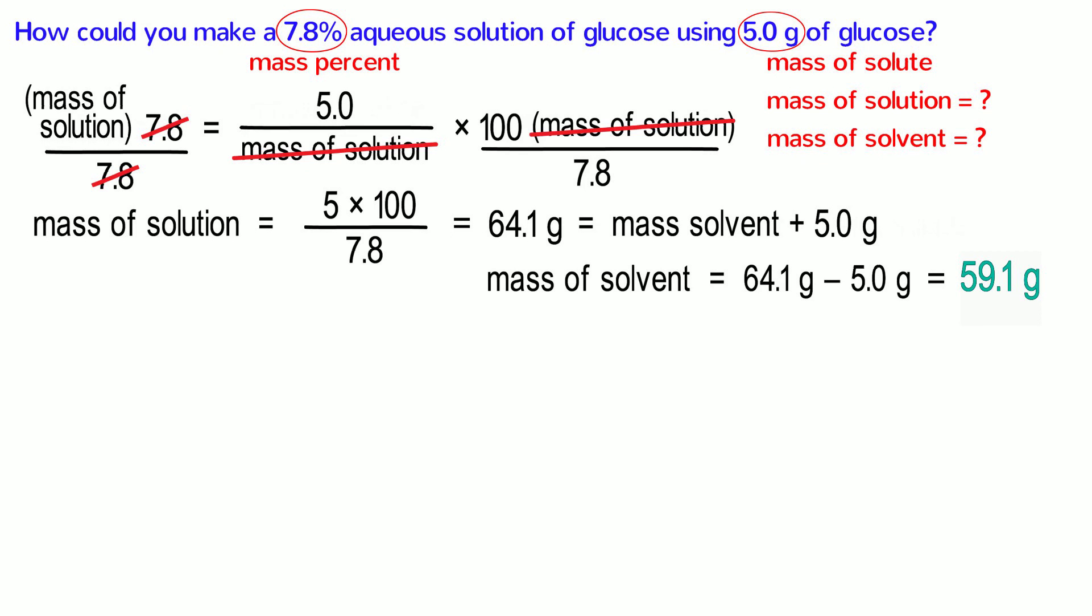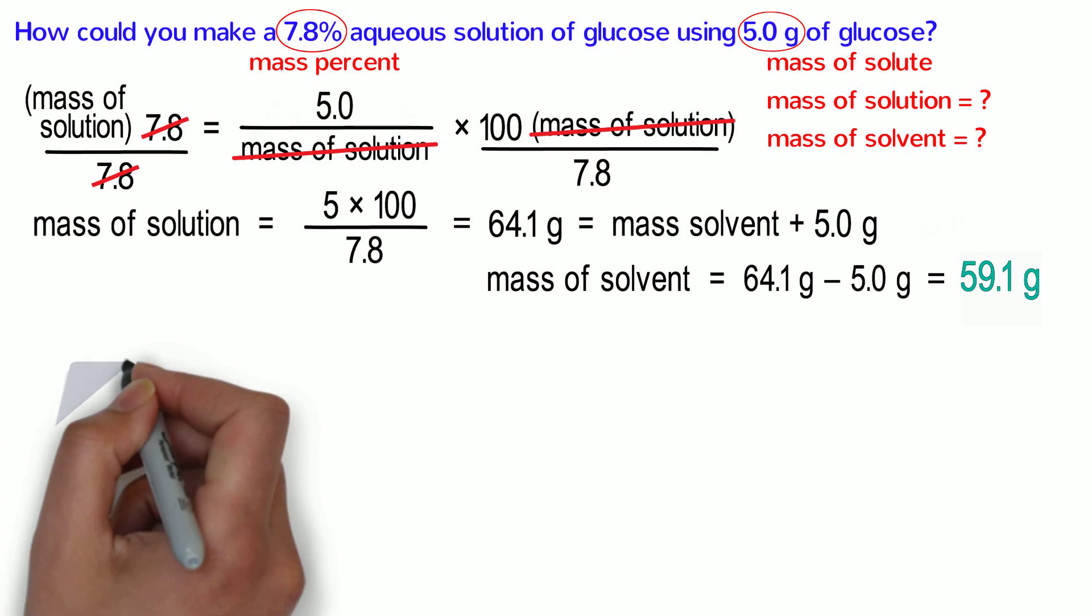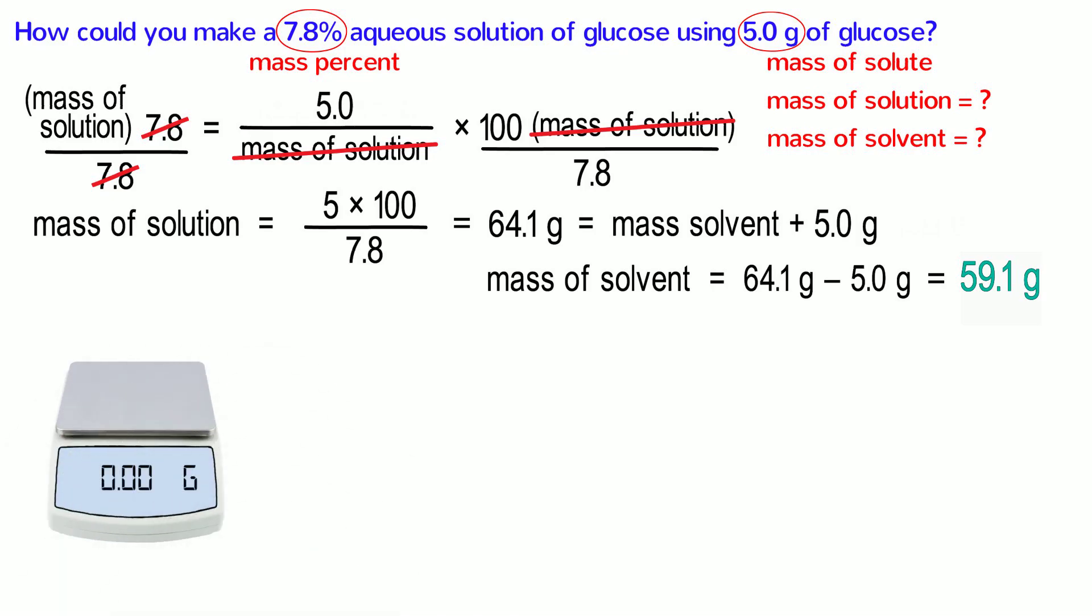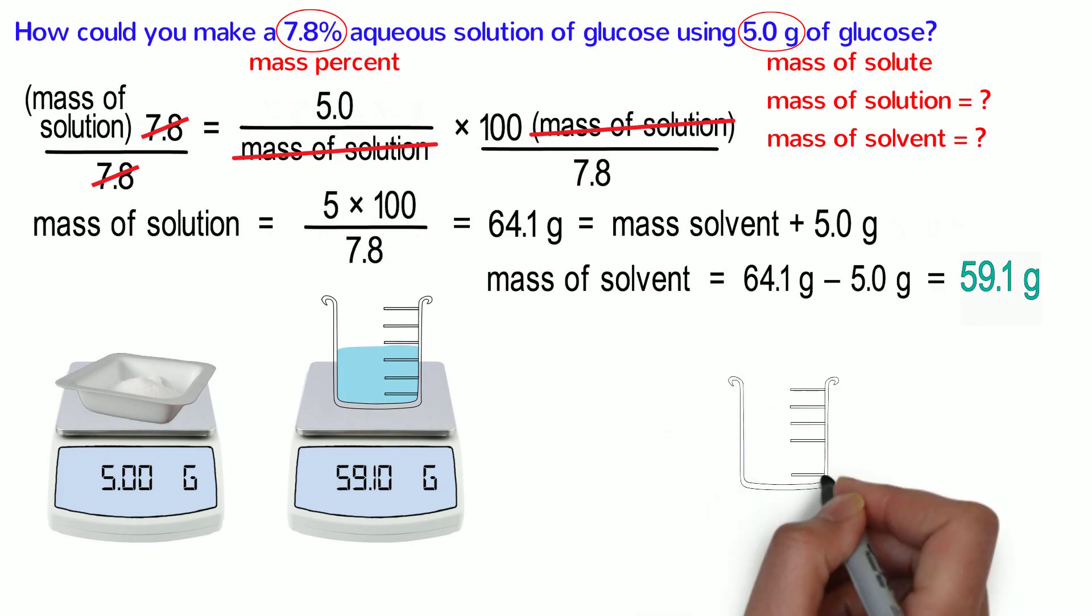By the way, the reason I have included an extra significant figure for this quantity is because it is not based on a measurement but something we will make in the lab, so we want it to be as precise as possible. Now that we have the numbers we need, we can go ahead and weigh everything we need. Weigh the glucose in a weighing boat or a clean weighing container. Although we could use a graduated cylinder to measure the water, it is better to weigh the water. Once we have the correct amounts, simply combine them in a beaker or flask and stir it a little until it is all dissolved. The resulting solution is a 7.8% aqueous glucose solution.